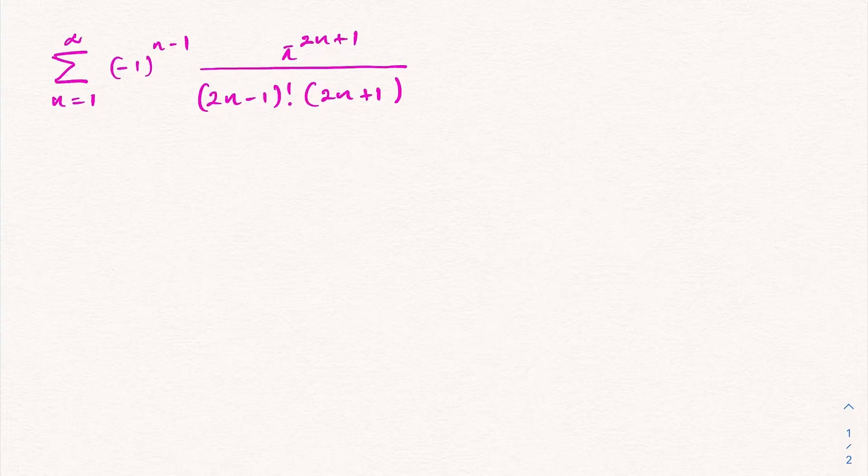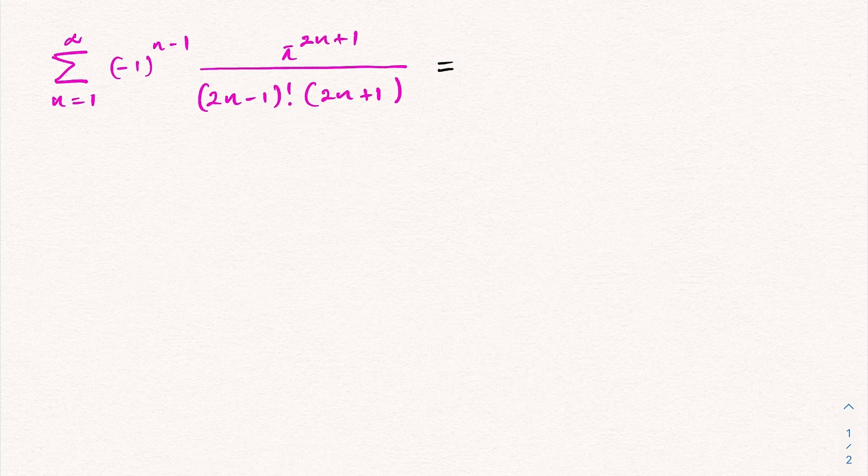Hello everyone, welcome to the Mathematics In My channel. In this video we are going to solve this nice infinite series: the sum from n equals 1 to infinity of (-1)^(n-1) times 5^(2n+1) over (2n-1)! times (2n+1).